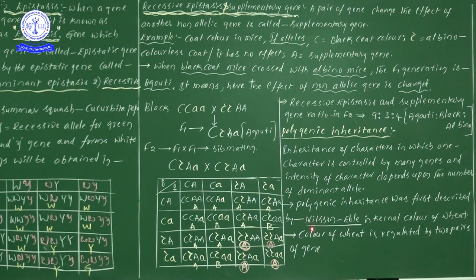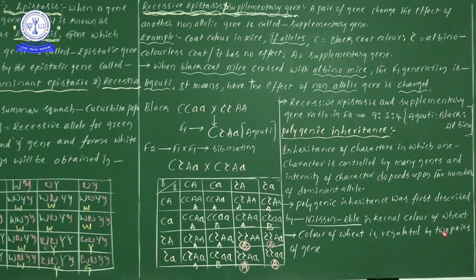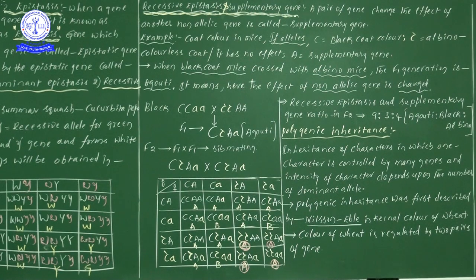Poly means many — many genes control one character. When many genes control one particular character, that phenomenon is taken under polygenic inheritance. The intensity of character depends upon the number of dominant alleles. Polygenic inheritance was first described by Nilsson Abel in kernel color of wheat.